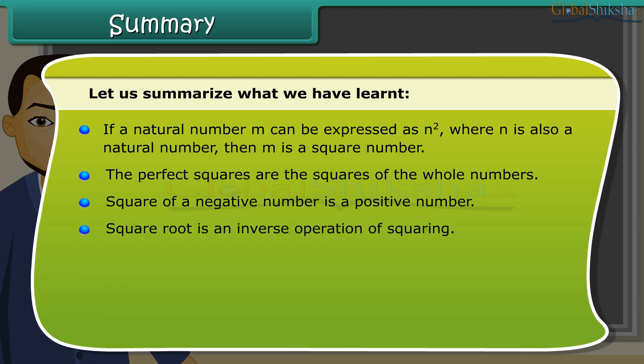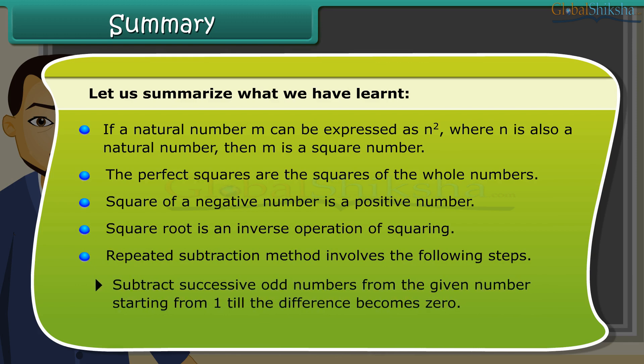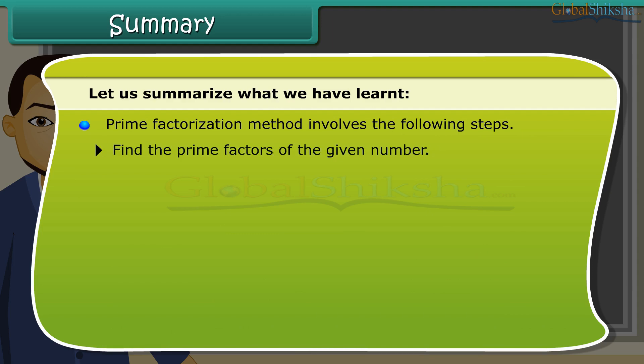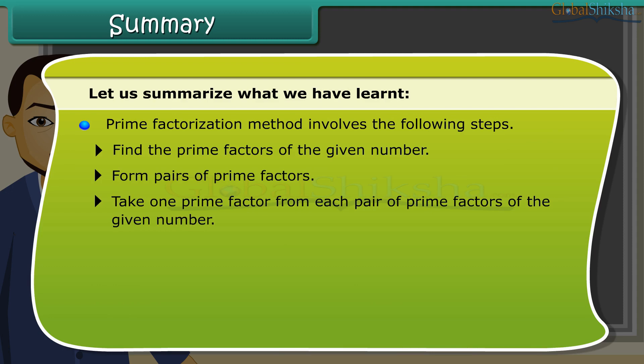Square root is an inverse operation of squaring. Repeated subtraction method involves the following steps. Subtract successive odd numbers from the given number starting from 1 till the difference becomes 0. Count the number of steps it took to get the difference as 0. Prime factorization method involves the following steps.